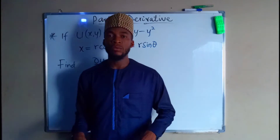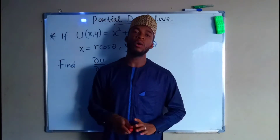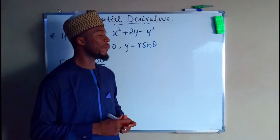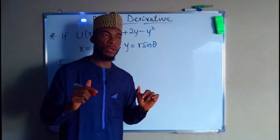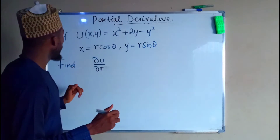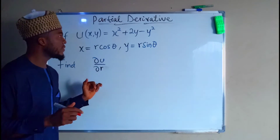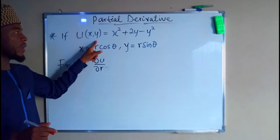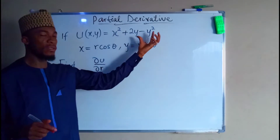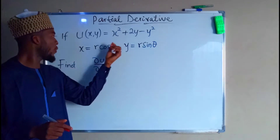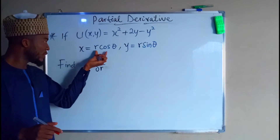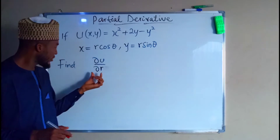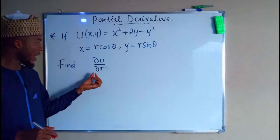Hello, good day viewers. Today I want to show you how to find the partial derivative of a function using chain rule. Look at this statement: u is a function of x and y, which is equal to this, and we are given x to be equal to this and y equal to this.